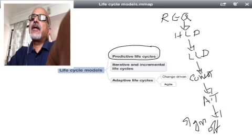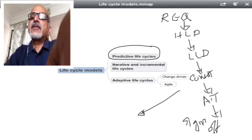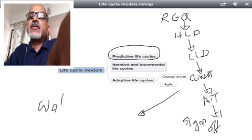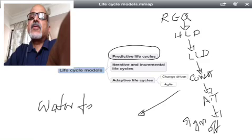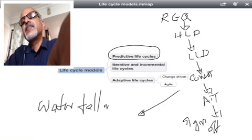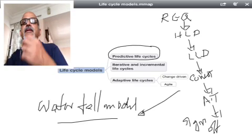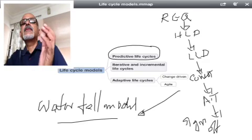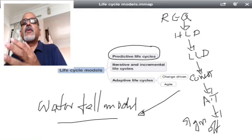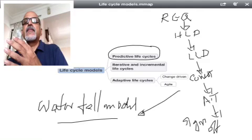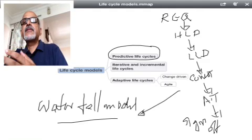In IT, we call it something called waterfall model. So in the waterfall model, we collect all the requirements first, we freeze it, get the sign-off from the customer, then you move on to the high-level design phase.